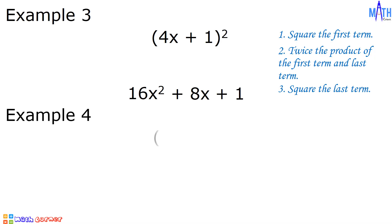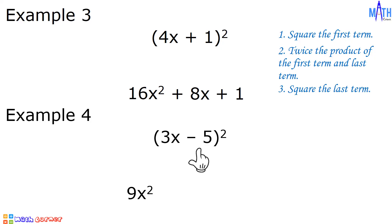Last example, example number four: what is the square of 3x minus 5? Step number one: square the first term. 3x times 3x is equal to 9x squared. Step number two: twice the product of the first term and the last term. 3x times negative 5 is negative 15x. Negative 15x times 2 is negative 30x.